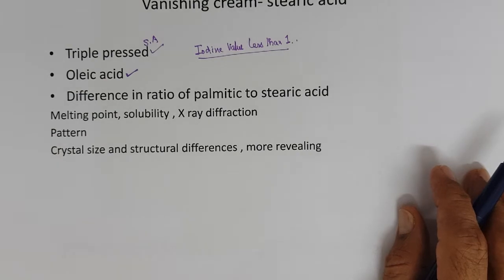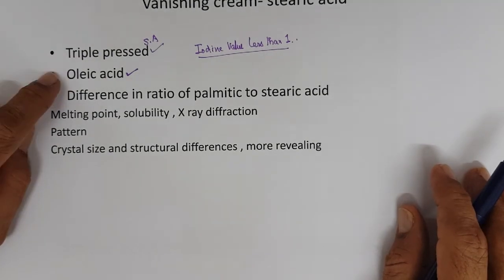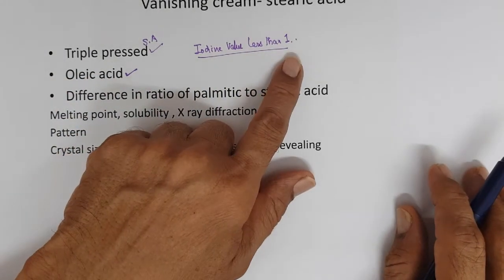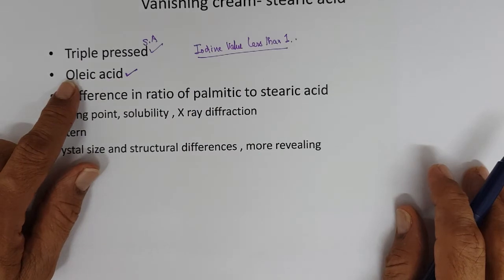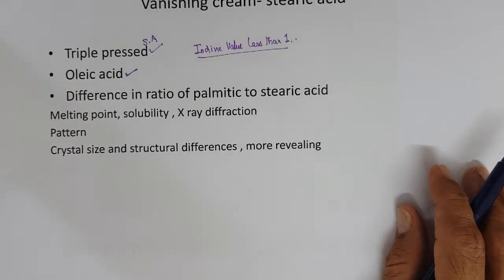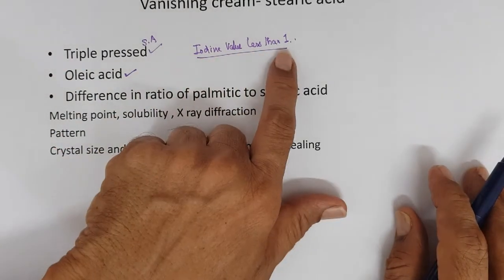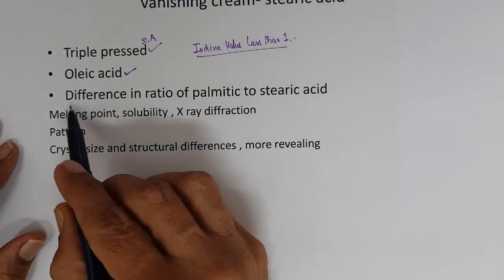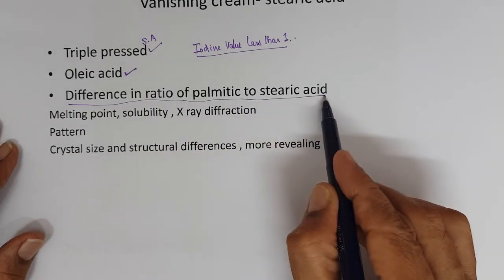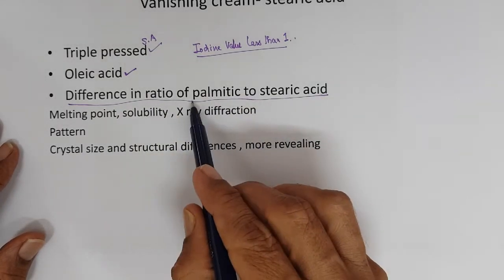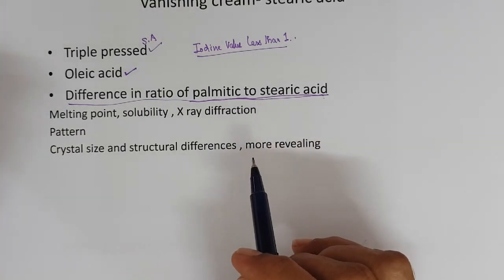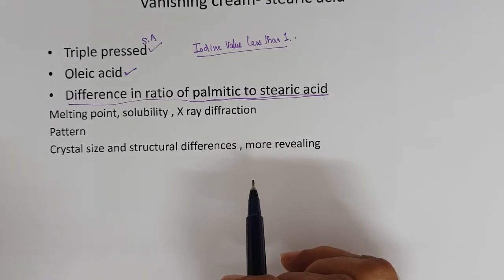The stearic acid with very very low level of oleic acid is supposed to be high quality stearic acid for cosmetic use, and that is called triple pressed stearic acid, with iodine value less than 1 very preferable. Iodine value is the measure of unsaturated fatty acid present. If iodine value is high, then oleic acid content is high, then the stearic acid is prone to rancidity.